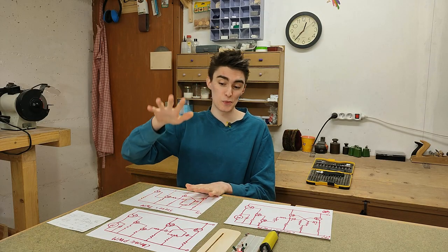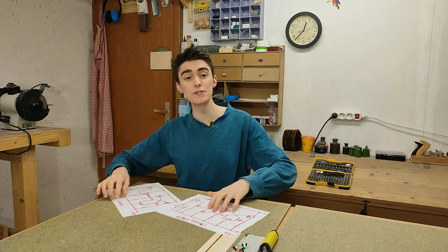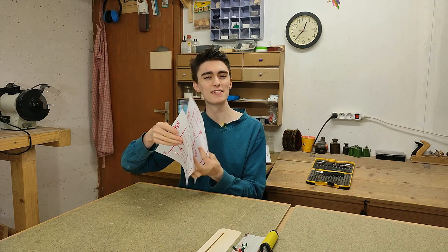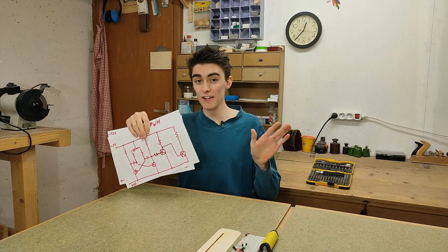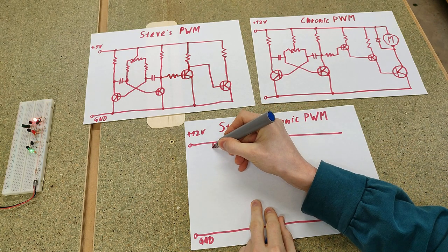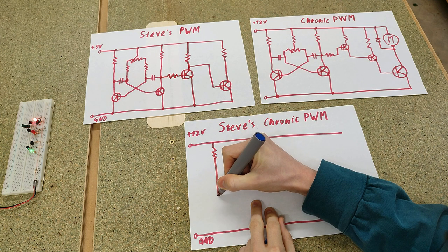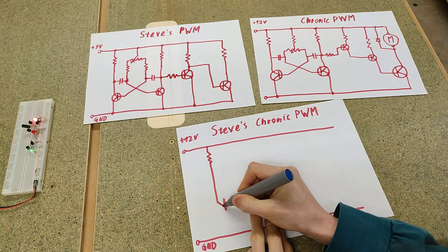Now we have Steve's design as well as mine, let's get all this crap out of the way and put the two together, because even though Steve's design is good, there are still things that can be improved. We're gonna start off with the standard astable multivibrator shell, just a couple of resistors and transistors loosely strewn about.